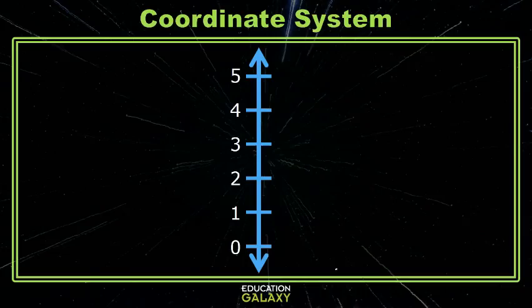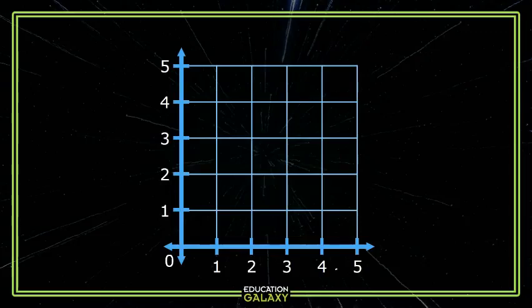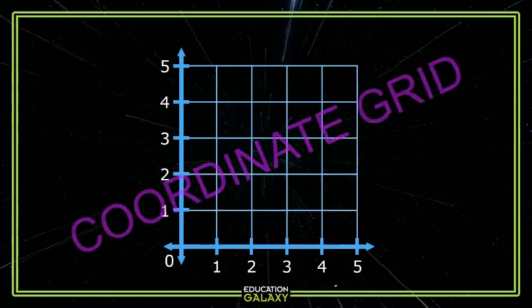But something happens when number lines collide. You get this thing. And this is called a coordinate plane or coordinate grid.